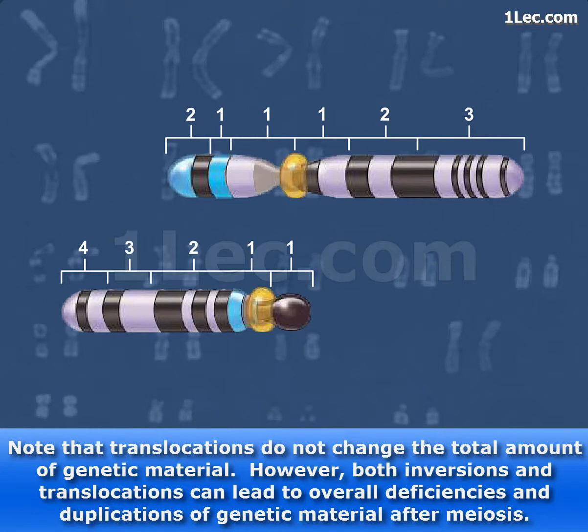However, both inversions and translocations can lead to overall deficiencies and duplications of genetic material after meiosis.